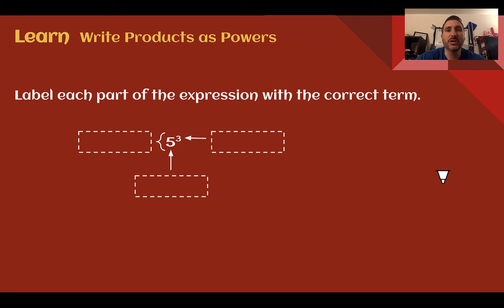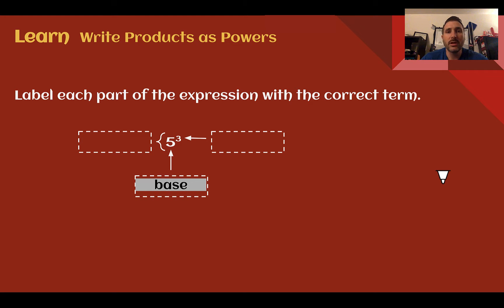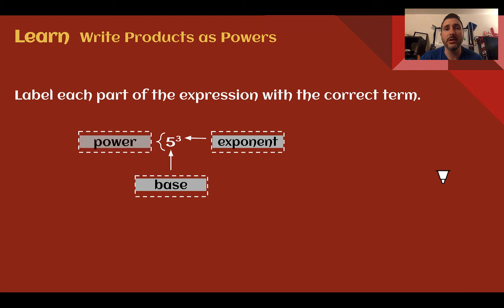Let's label each part of the expression with the correct term. The number that is being multiplied is called the base — here 5 is being multiplied. The number of times that base is used as a factor is your exponent. Both of those things together make your power. So 5 is our base, 3 is our exponent, and 5 to the exponent of 3 makes our power.